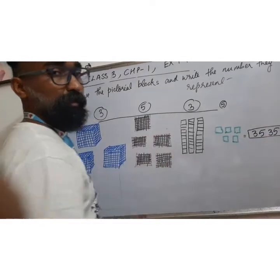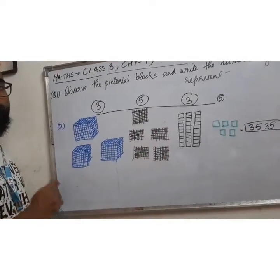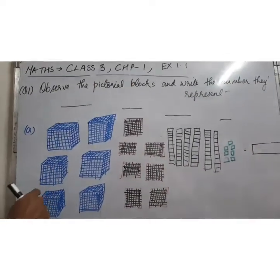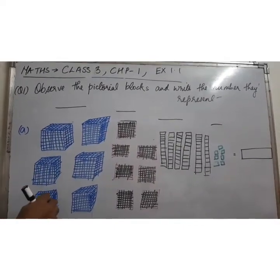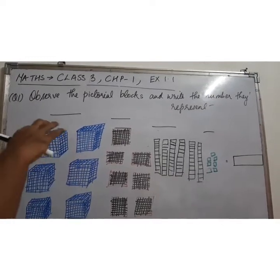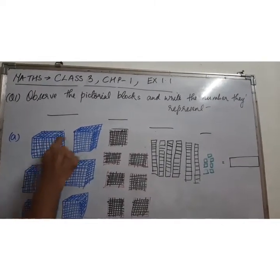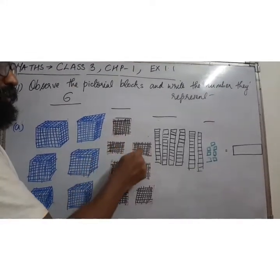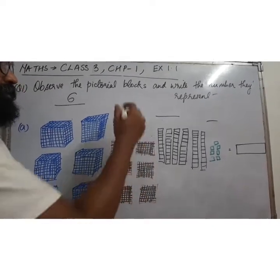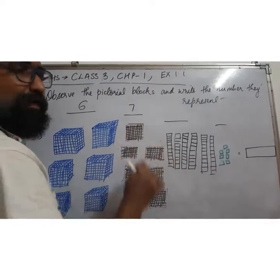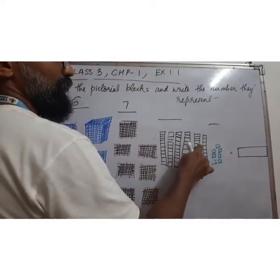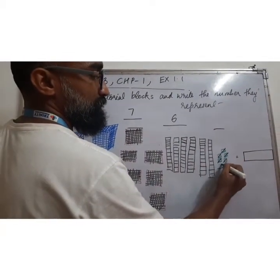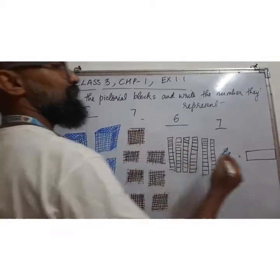So we'll start with question number B. It says observe the pictorial blocks and write the number. Look, this is 1000, 1000 ka box. How many boxes? 1, 2, 3, 4, 5, 6. This is 100 unit ka packet, 1, 2, 3, 4, 5, 6, 7. Seven packets. And this is 10, 10 ka. How many? 1, 2, 3, 4, 5, 6. And this is single, 1, 2, 3, 4, 5, 6, 7.